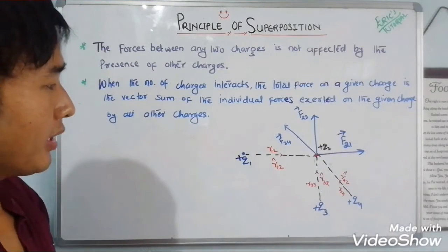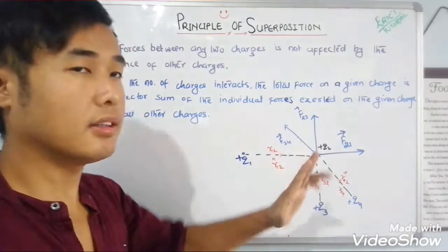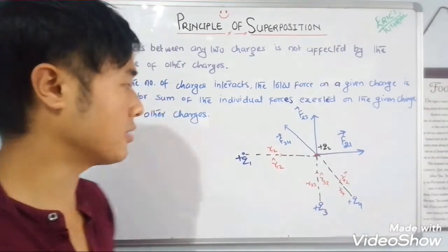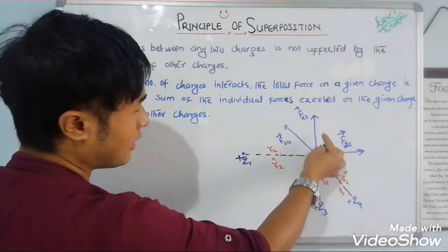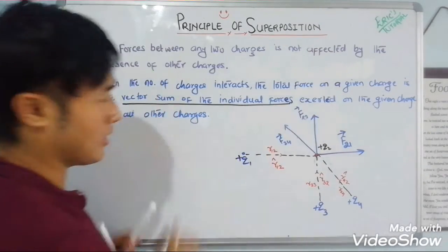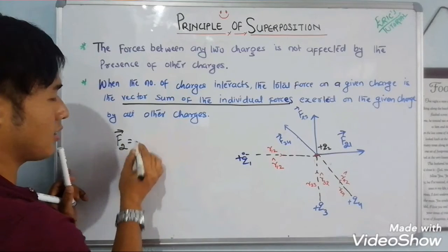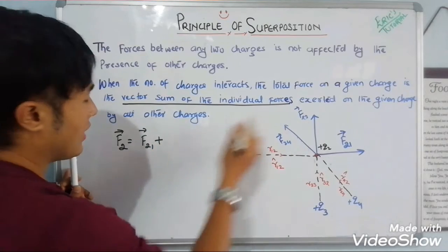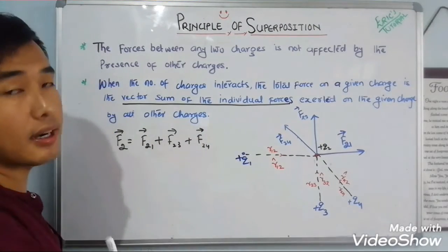Now, as we established with Point 1, the individual forces are not affected by the presence of other charges — those forces remain as they are. So, the net force on this particular charge q2 is: what is the total force on the given charge? It is simply the vector sum of the individual forces. The net force on q2 is: F₂ = F₂₁ + F₂₃ + F₂₄.